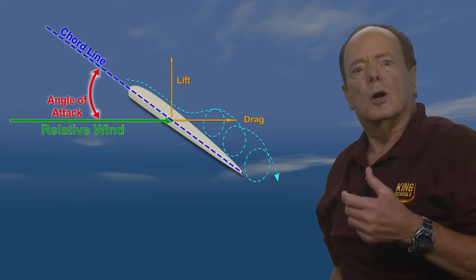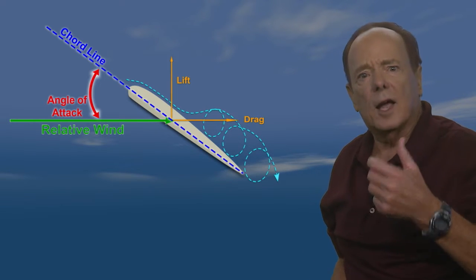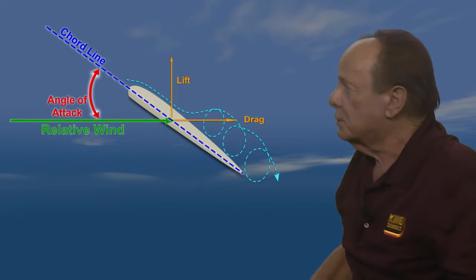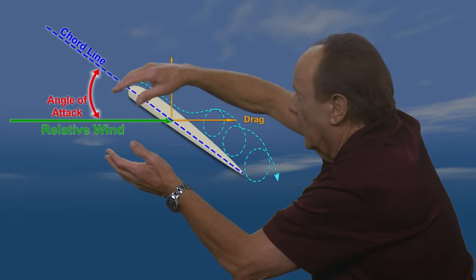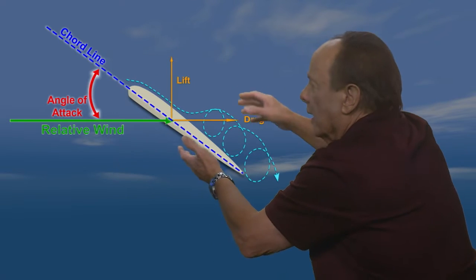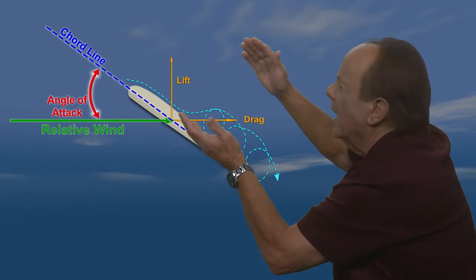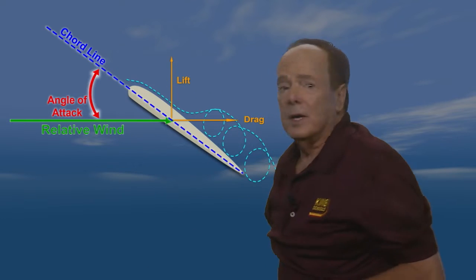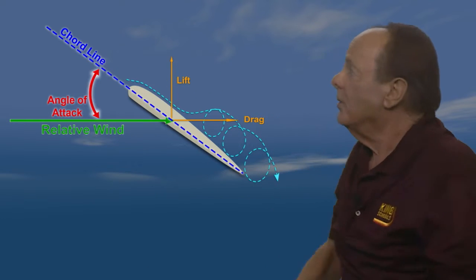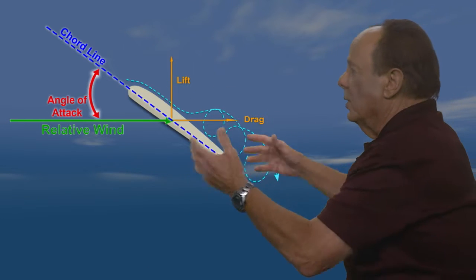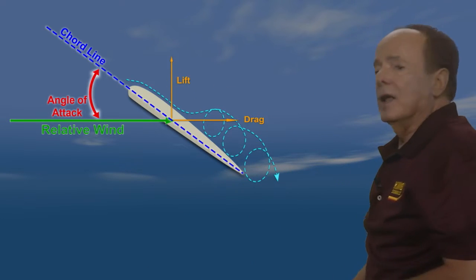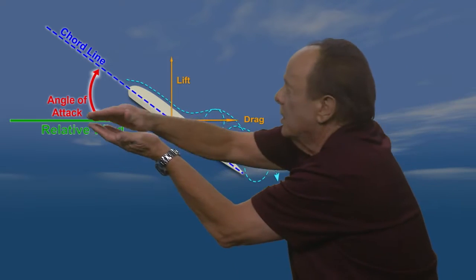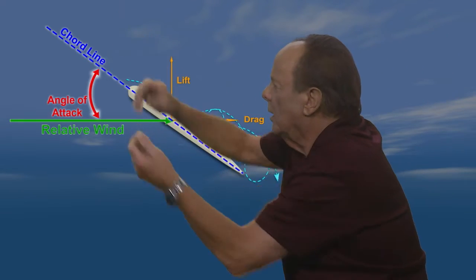The stalling angle of attack is independent of the speed of the airflow over the wing. It's the angle of attack at which an airplane stalls, not the speed at which it stalls. Exceeding the critical angle of attack is what causes a stall.